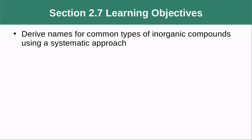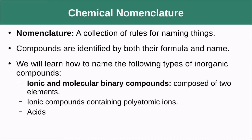In section 2.7 we're going to talk about how to name ionic and covalent compounds — nomenclature, which is a collection of rules for naming things. Compounds can be identified by both their formula and their name. We'll learn to name both ionic and molecular binary compounds composed of two elements, and talk about ionic compounds containing polyatomic ions.